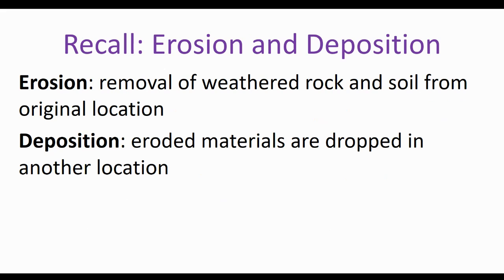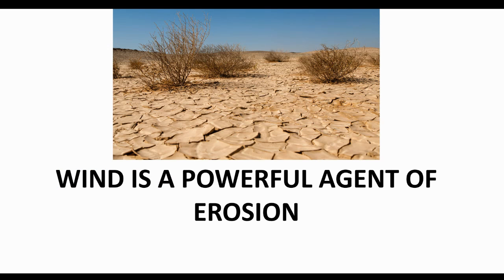Recall from our last session that erosion is the removal of weathered rock and soil from its original location. A lot of times students like to think that erosion is the breaking down of rock, but it's the movement of things that have already been broken down. Deposition is when the eroded materials have been dropped in another location. Wind is going to be a powerful agent of erosion and we're going to explain why.